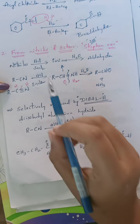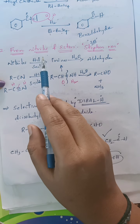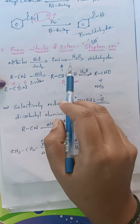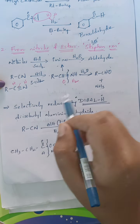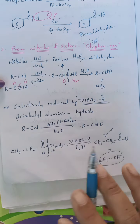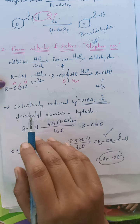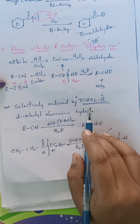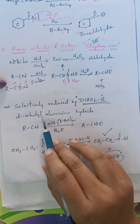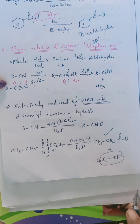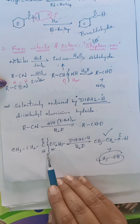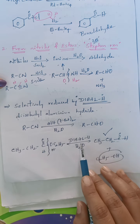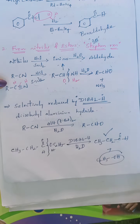To summarize: in the Stephen reaction, nitriles undergo reduction in presence of HCl and stannous chloride, converting into imines which on hydrolysis give aldehydes. The same reduction can also be done selectively using DIBAL-H (diisobutylaluminium hydride), where nitriles and esters undergo reduction to give corresponding aldehydes.